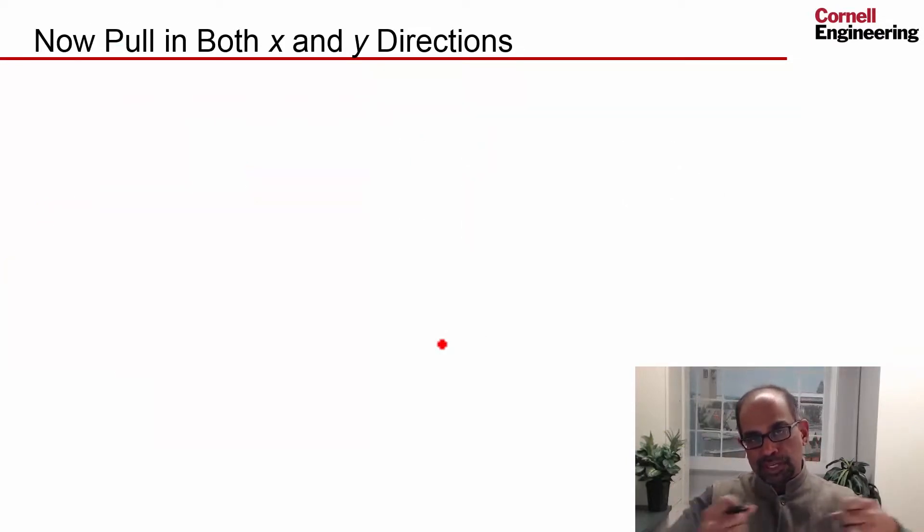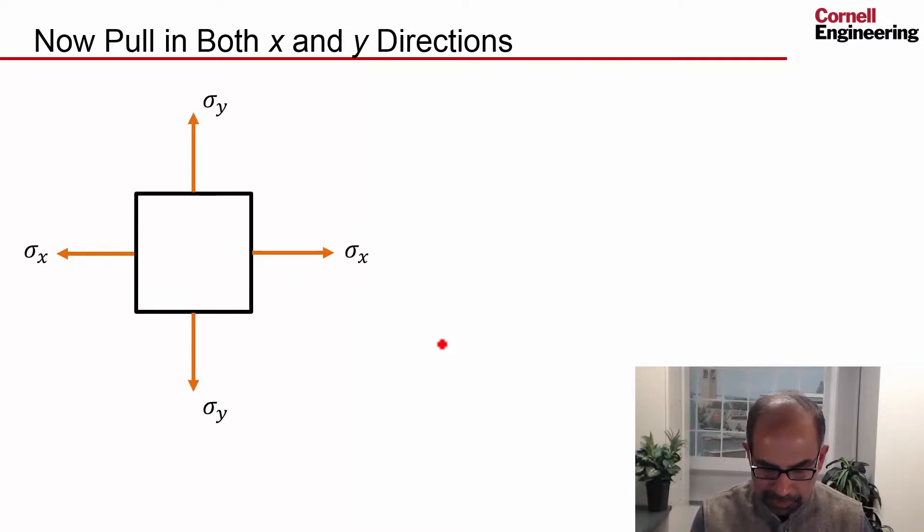Now let's pull in both directions, in X as well as in Y. So I have sigma X pulling in X and pulling with the stress sigma Y in Y. And so sigma X is going to cause a strain in the X direction due to sigma X. This we already saw. Now sigma Y is going to cause shrinking in the X direction, and that's going to be given by the Poisson's ratio. So that's going to be the strain caused by sigma Y in the X direction.